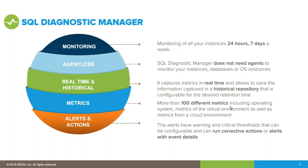Historical information is kept in a SQL database repository. By default we store one year, but you can configure it for 30, 60, 365, or more days. As a rule of thumb, each instance per year is about two to three gigabytes of data, so ten instances would be roughly 20 to 30 gigabytes for one year.